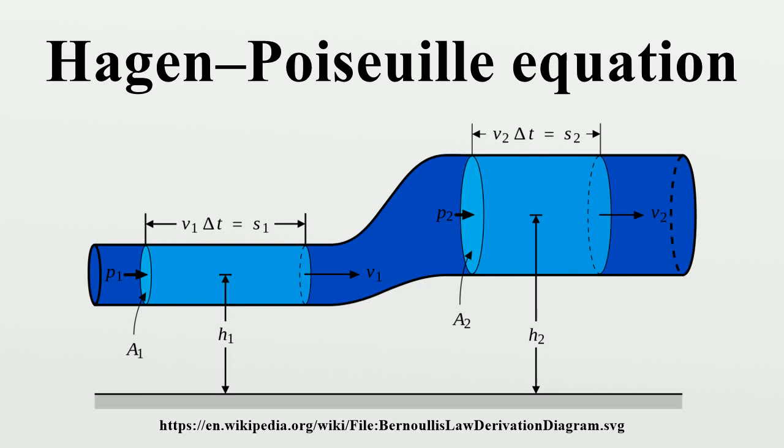is a physical law that gives the pressure drop in an incompressible and Newtonian fluid in laminar flow flowing through a long cylindrical pipe of constant cross-section.